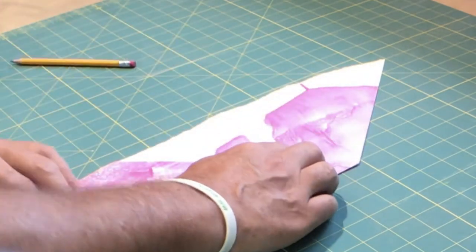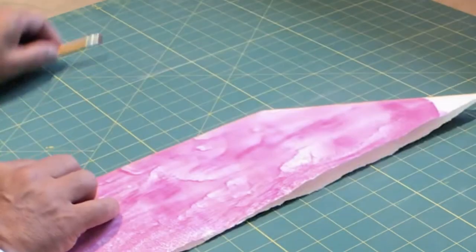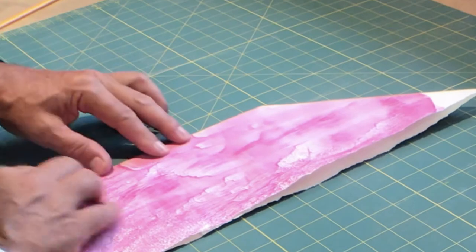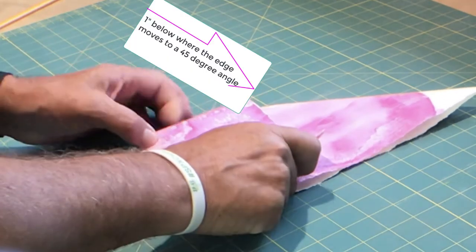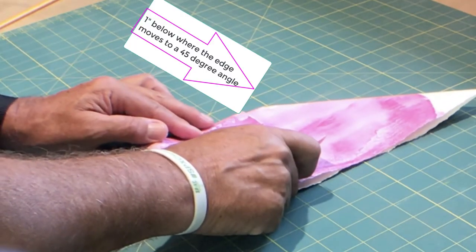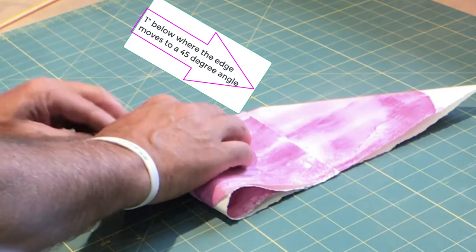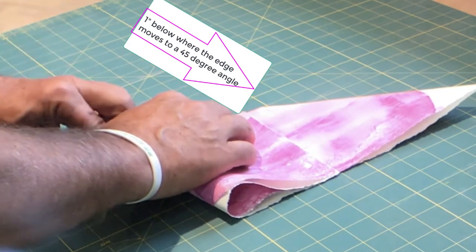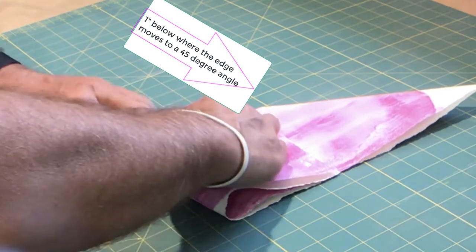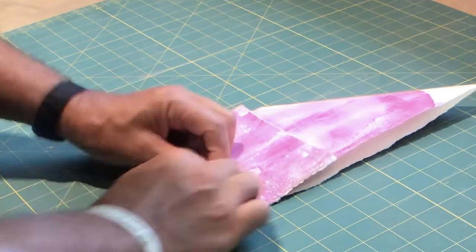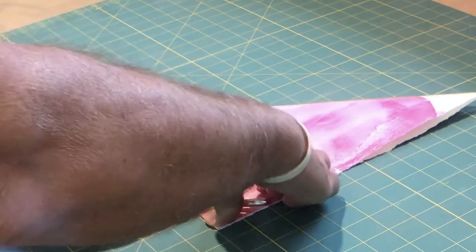Next thing we're going to do is flip this over and I'm going to fold up from the bottom to the top, almost to the top where it starts making 45, about an inch below that mark is where it kind of works best. You can see what works best for you, but I kind of like it an inch. It leaves a little bit of an interesting fold when you're totally done if you do it that way.